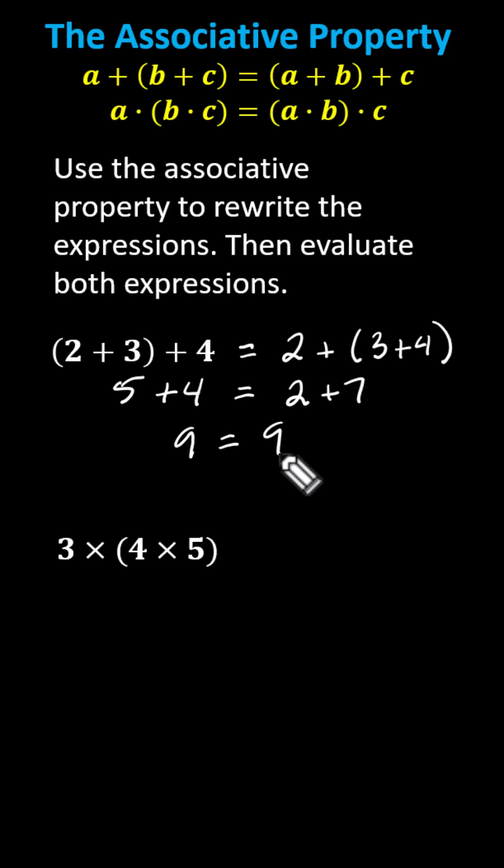For the second example we have 3 times the product of 4 and 5. Applying the associative property this is equivalent to the product of 3 and 4 times 5.